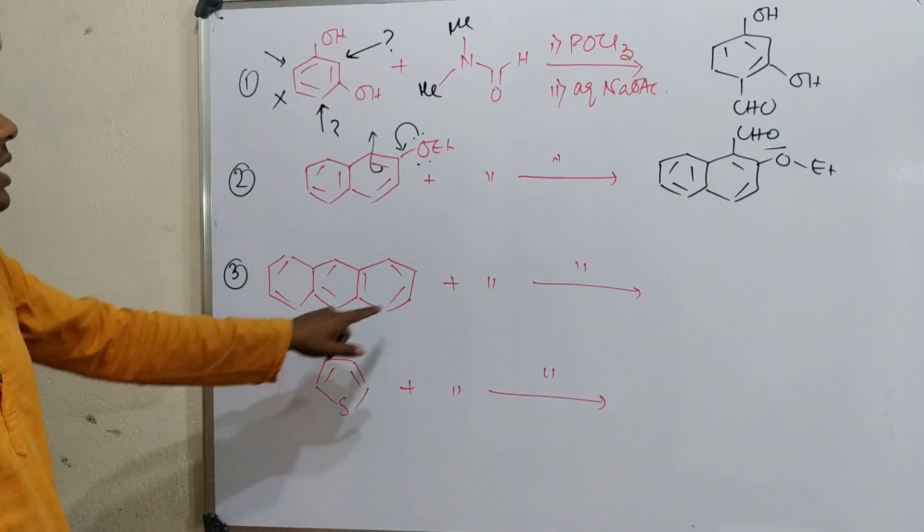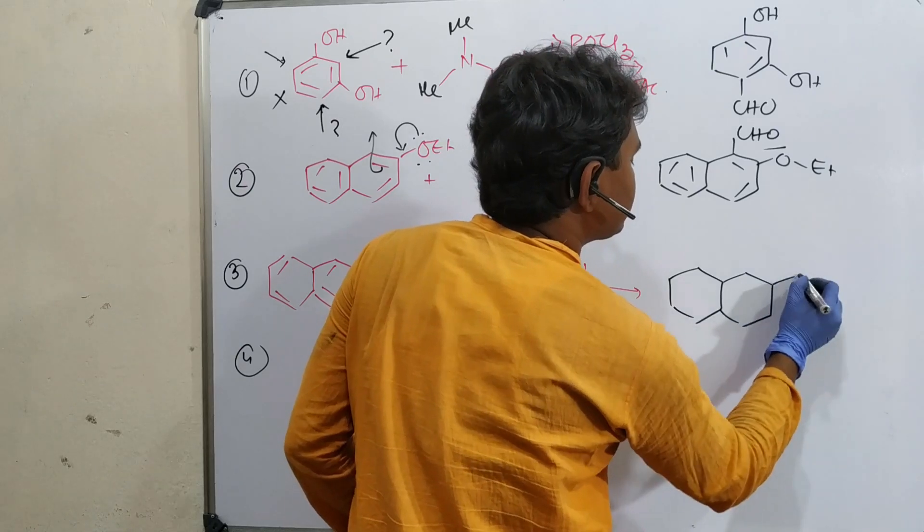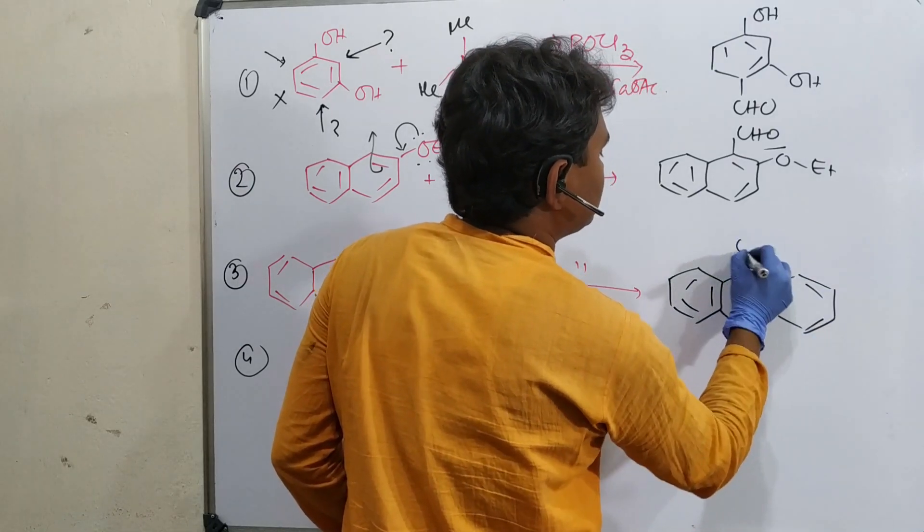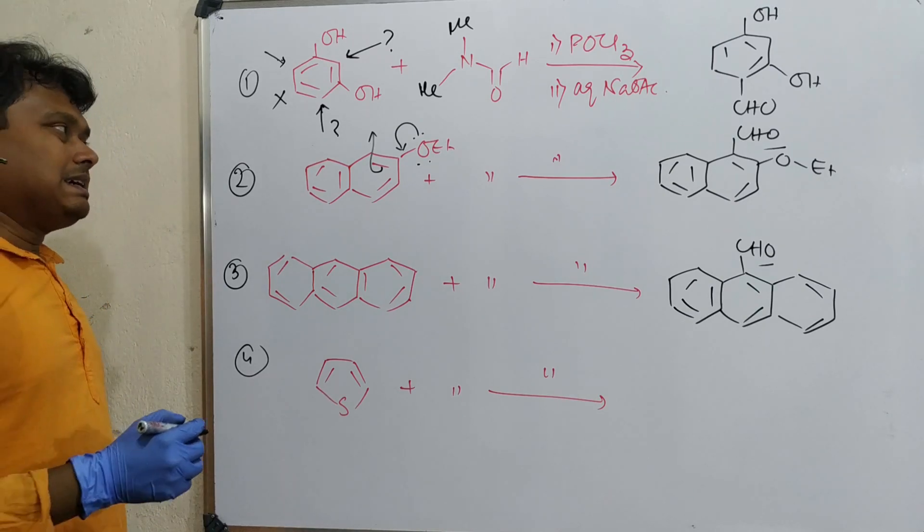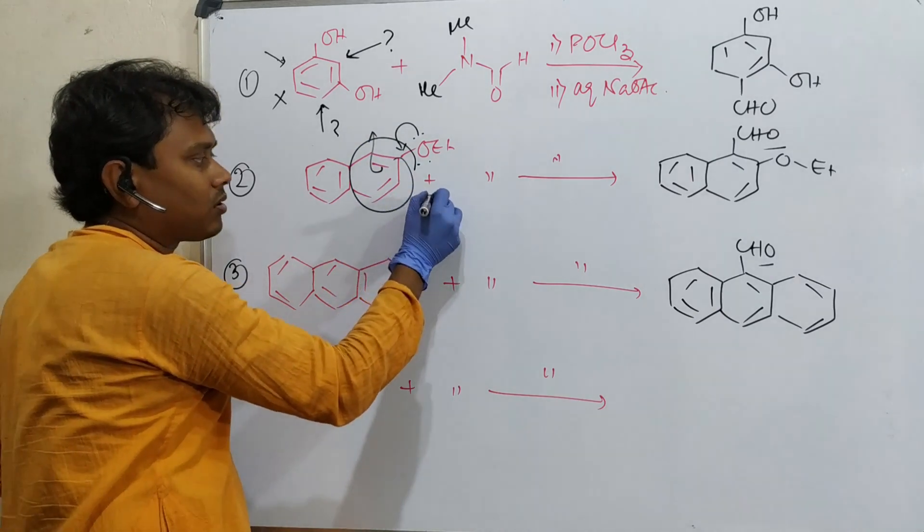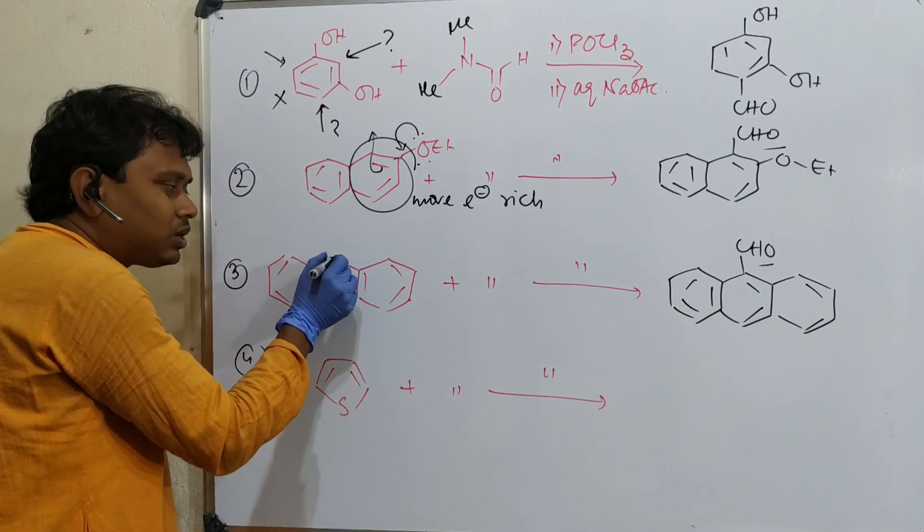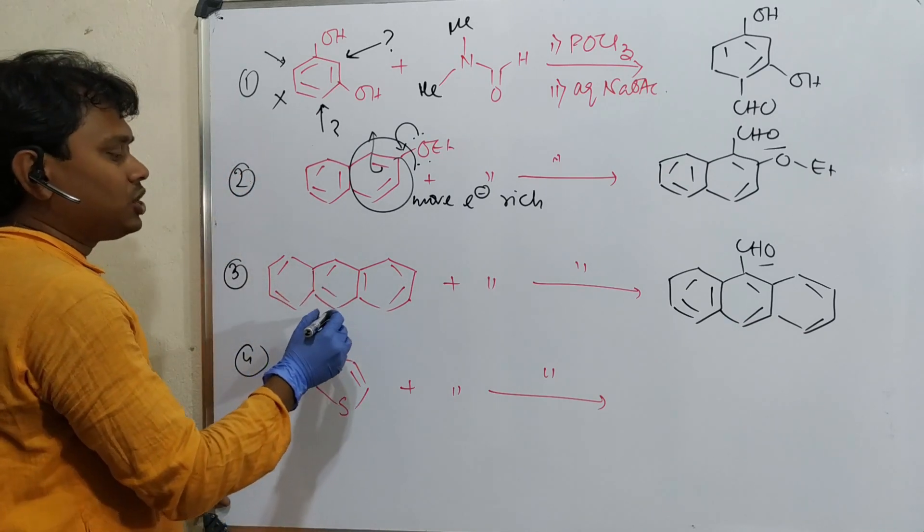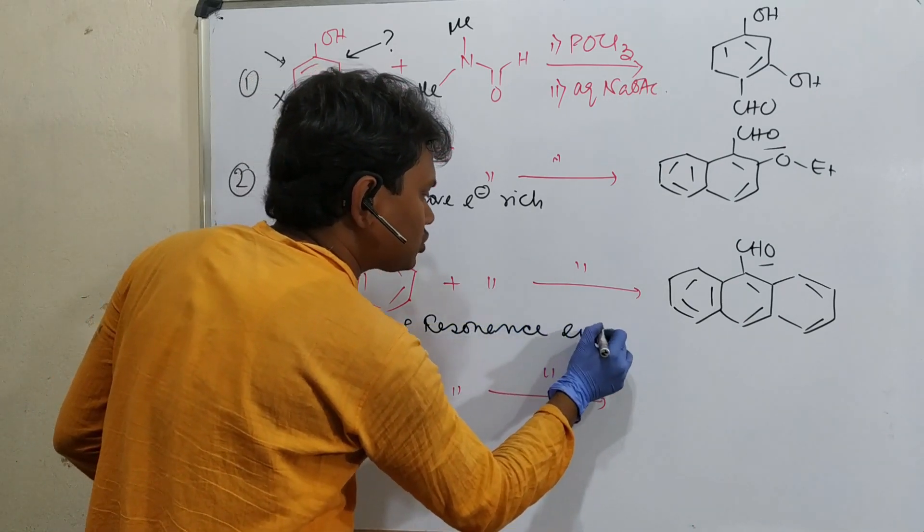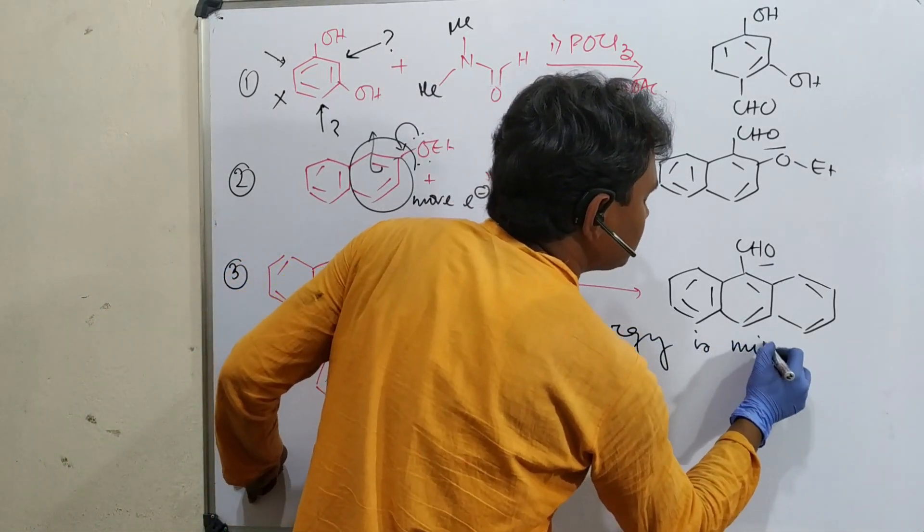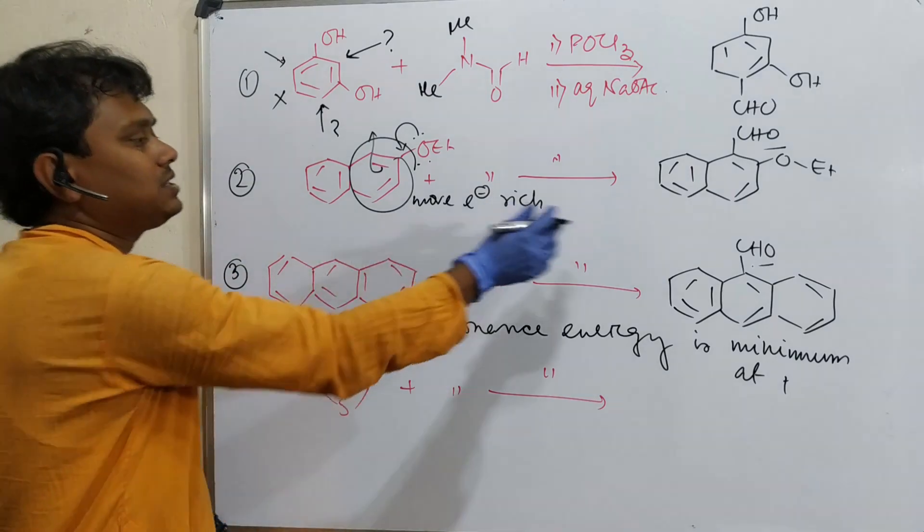In case of anthracene, the reaction will happen here at the 9-position. Why this position? Because this is aromatic electrophilic substitution. This central ring part is more electron-rich. When aromatic electrophilic substitution happens, the corresponding loss of resonance energy is minimum at this position. This is the ideal position.